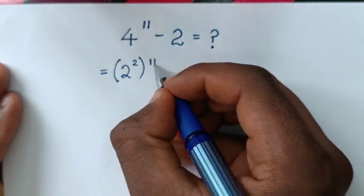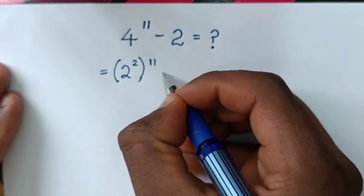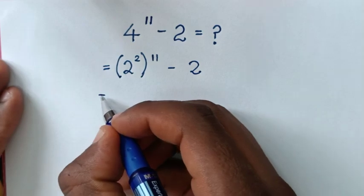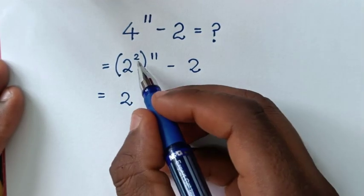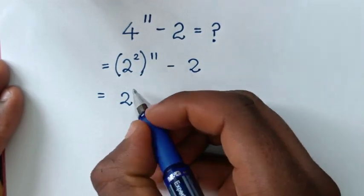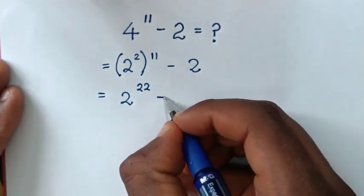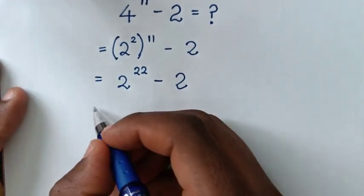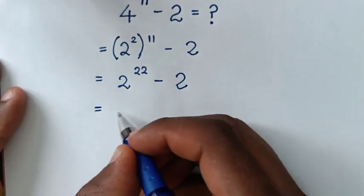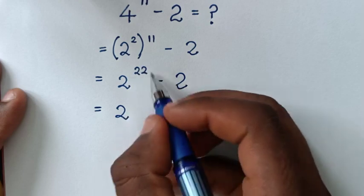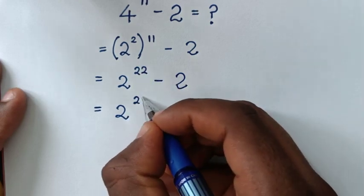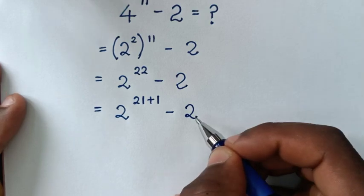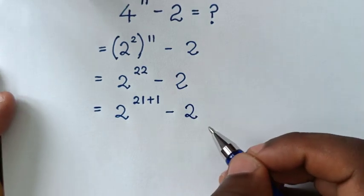So we have 2 squared, bracket, to the power of 11, then minus 2. This equals 2 to the power of 2 times 11, which is 2 to the power of 22, minus 2. Then 2 to the power of 22 is the same as 2 to the power of 21 plus 1, minus 2.